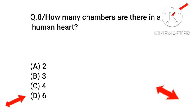Next question: how many chambers are there in a human heart? The right answer will be four. The number of chambers in the human heart is four.